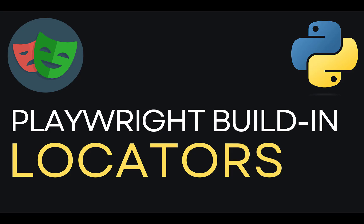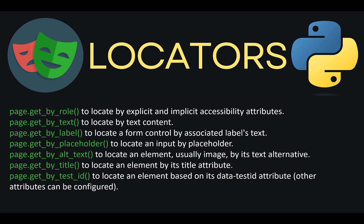Hi everyone and welcome to this Playwright pilot series. In this particular tutorial we will learn about the Playwright built-in locators. As an automation tester, when we are automating web applications, the first thing we need to do is locate the elements — buttons, links, fields you see on the web application. In order to locate them, we need locators. In Playwright we have built-in locators like page.get_by_role, get_by_text, get_by_label, placeholder, alternate text, title, and test ID.